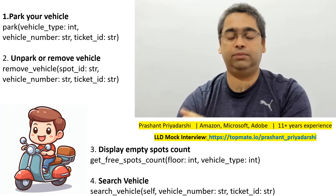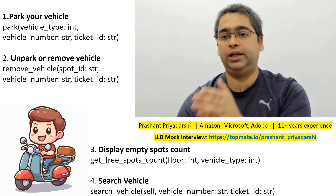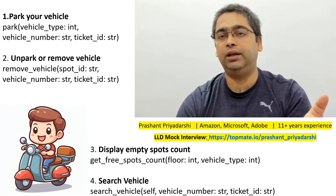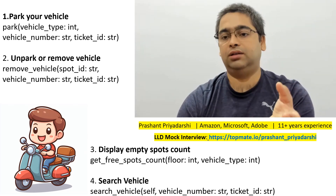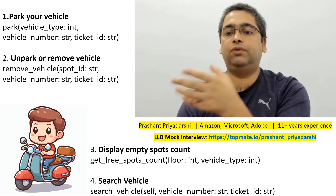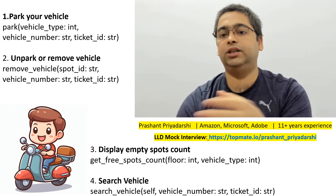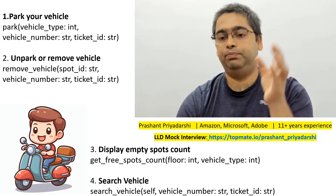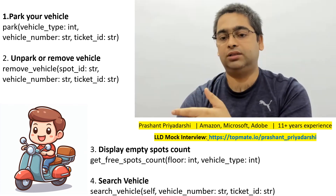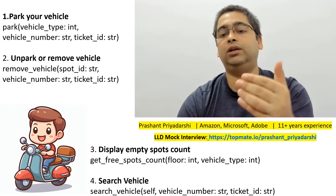There are other features in a parking lot — payments, analytics, user management, authentication, logging, and more — but parking lot is a large system that can take 10 to 20 engineers months to build. In a 45 to 60 minute interview, the interviewer is not expecting you to list hundreds of classes. A better approach is to focus on core features, deep dive into them, and discuss them. If the interviewer wants another feature, they will explicitly ask.